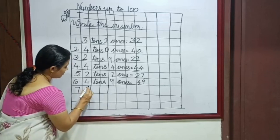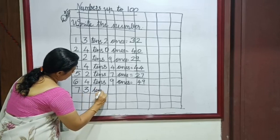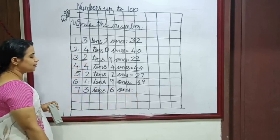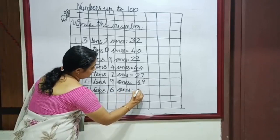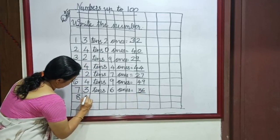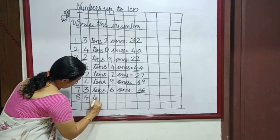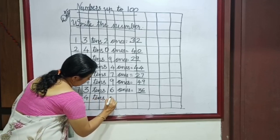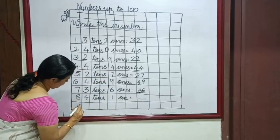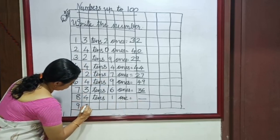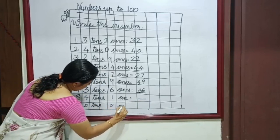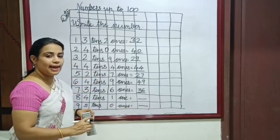7th question: 3 tens and 6 ones — tell me the answer. 3 tens and 6 ones. Yes, 36. 8th: 4 tens and 6 ones, 1 one — is equal to blank, we have to write the answer. Again, 5 tens, 0 ones — yes, just write the answer.